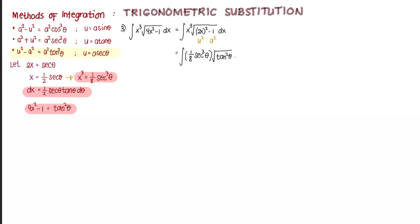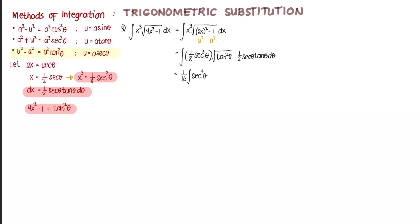We extract the square root of the radicand: the square root of tangent squared theta equals tangent theta. And dx is one half secant theta tangent theta d theta. Multiplying the constants — one eighth times one half gives one sixteenth — and combining the secants gives secant to the power of 4 theta. Extracting the square root of tangent squared theta and multiplying gives tangent squared theta d theta.